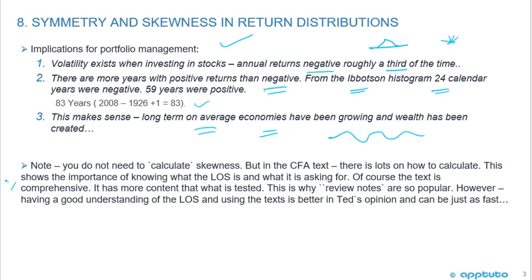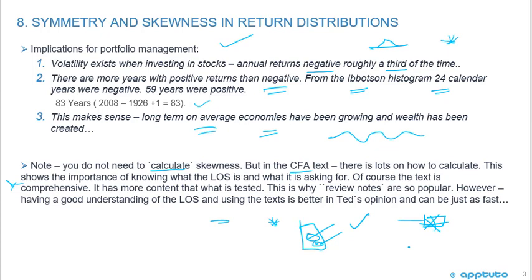Note: you don't need to calculate skewness, but in the CFA Level 1 text there's a lot on how to calculate it. This shows the importance of understanding what the LOS is asking for. The text is comprehensive — it's a textbook and will have more content than what is tested. You have to be able to put the text through a filter, identifying what's really important versus what you can skim. There are a lot of calculations on skewness — nice to know, but you don't really need them to pass the test.